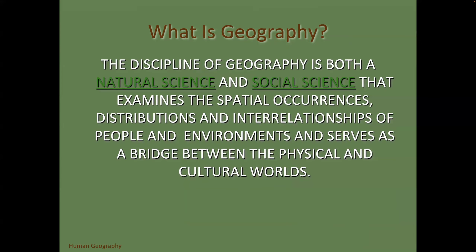Geography is both a natural and a social science that examines not only spatial occurrences, but the distributions and interrelationships of people and environment. Natural refers to physical geography — climates, geology, geomorphology — whereas social science implies culture, people, and population. Some things are affected by both social and natural components, and that's where geography comes in to help explain them.